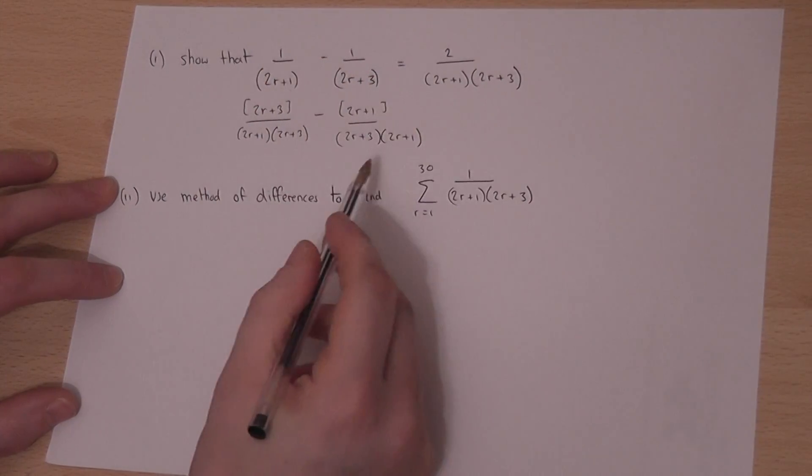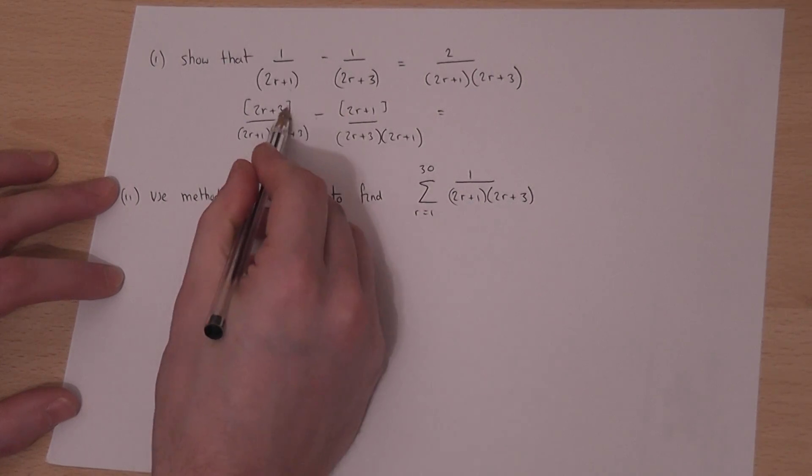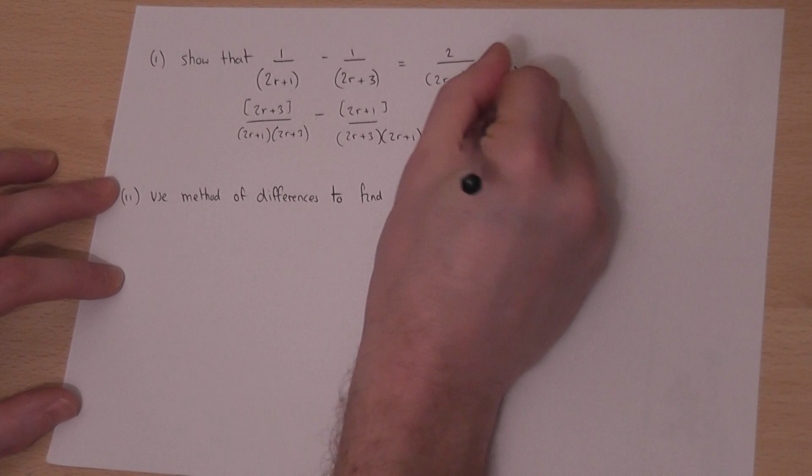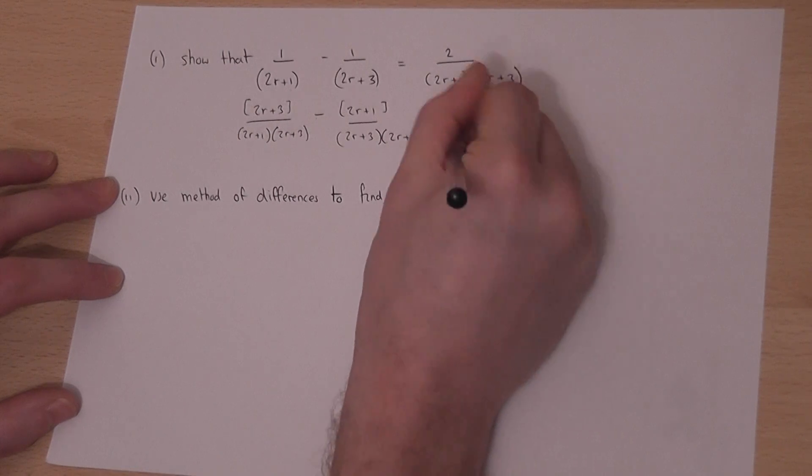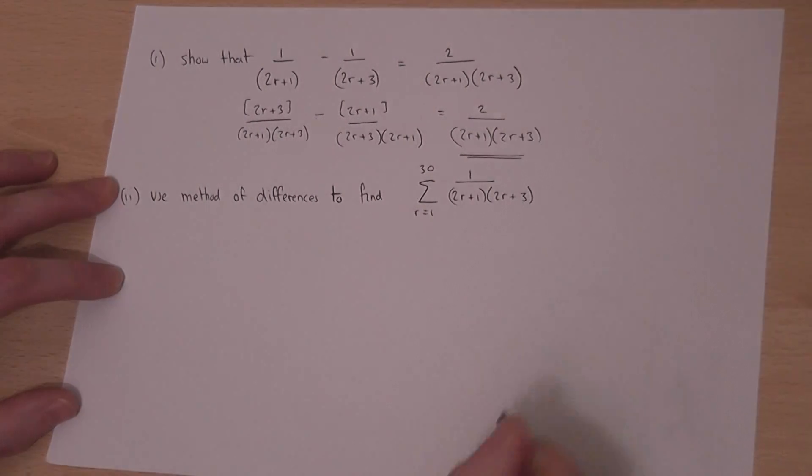They now share the same denominator. Well 2r take away 2r is just 0 and 3 take away 1 is 2. So as required we get the required expression on the right hand side.